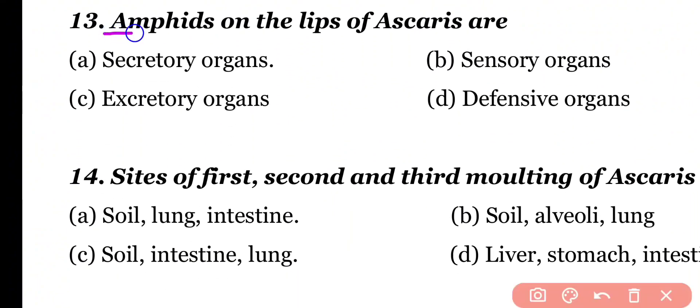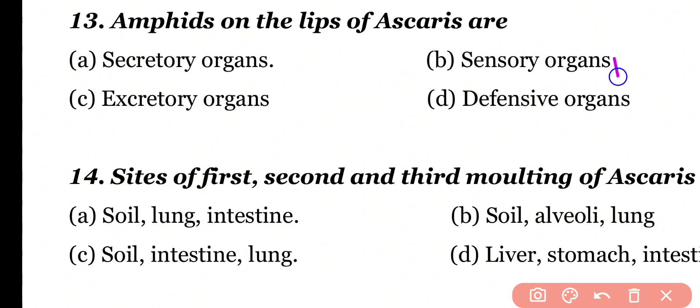Question 13: Amphids on the lips of Ascaris are secretory organs, sensory organs, or defensive organs. Correct answer is option B. Amphids, which are present on the lips of Ascaris, act as sensory organs important for chemoreception.